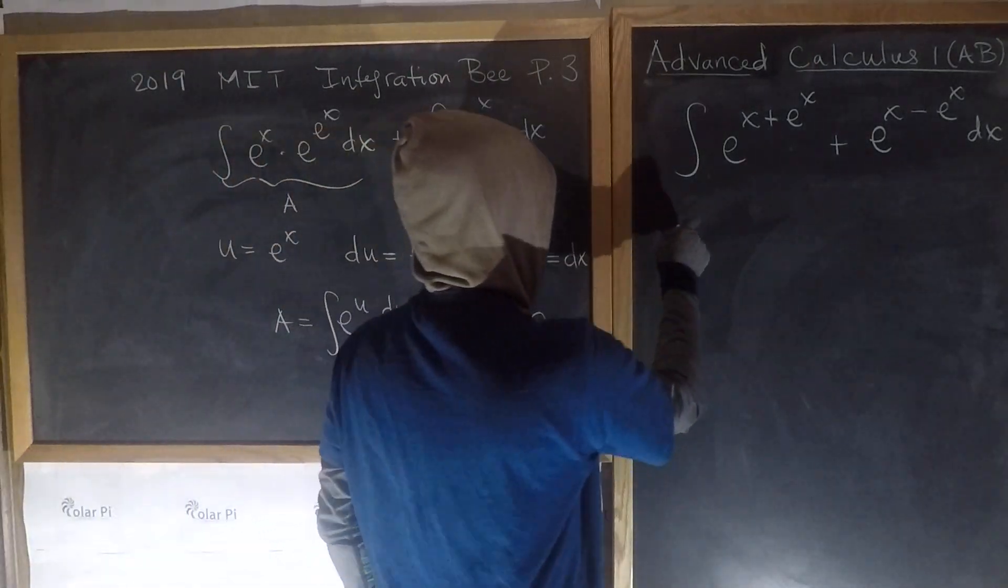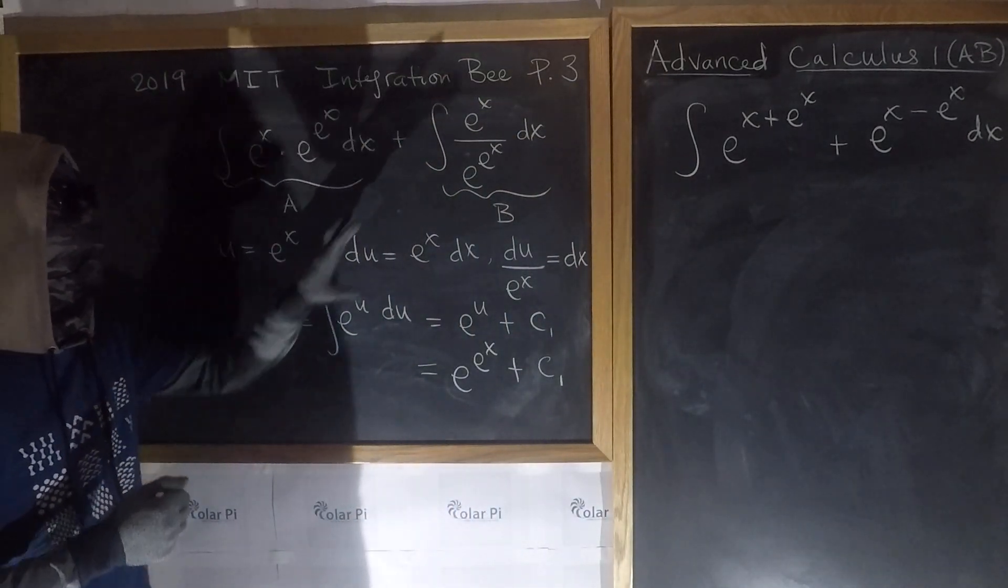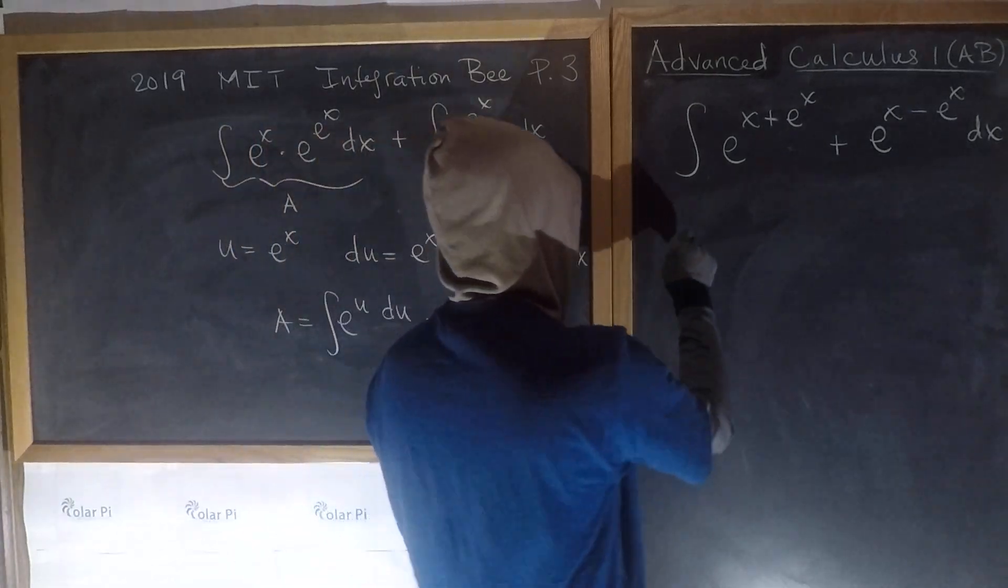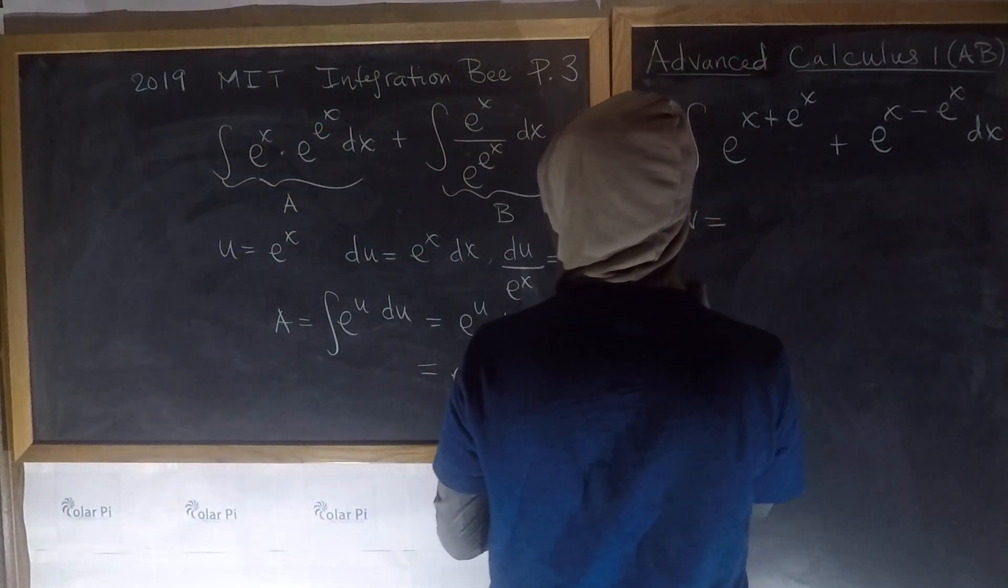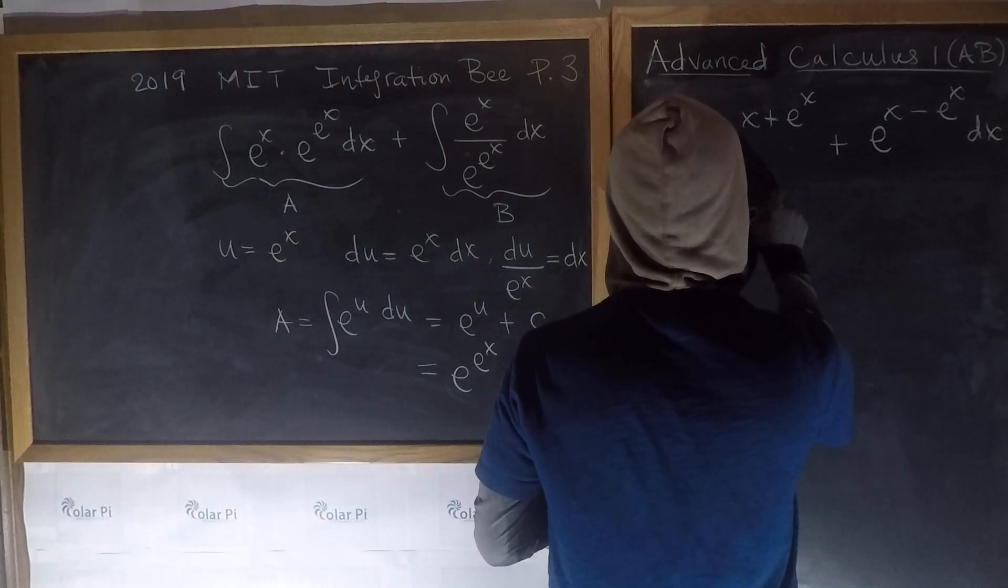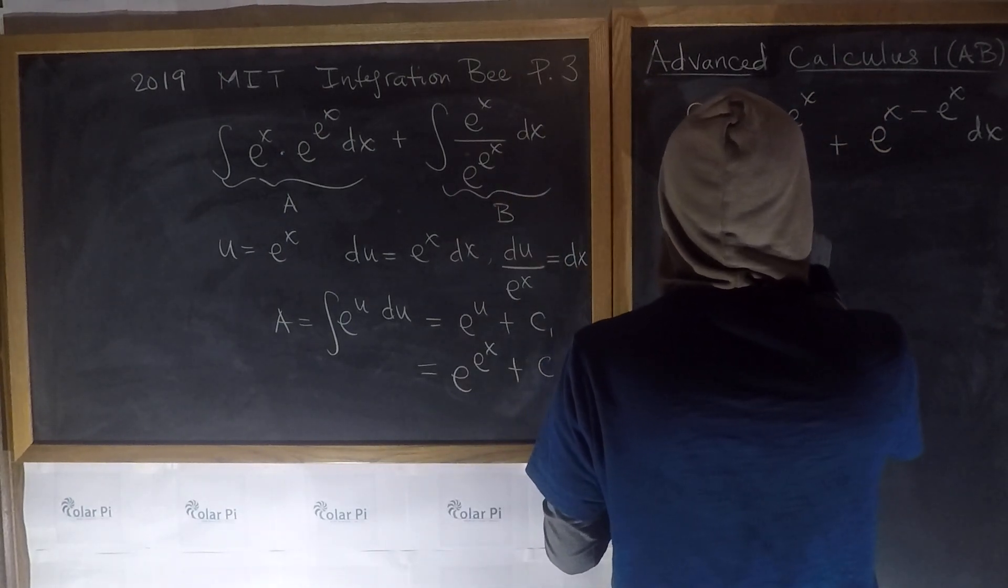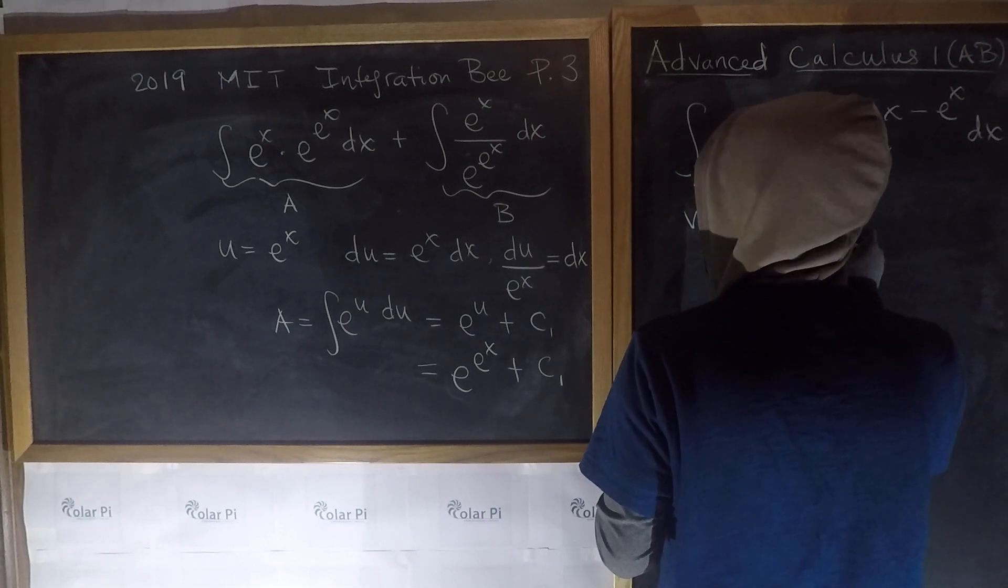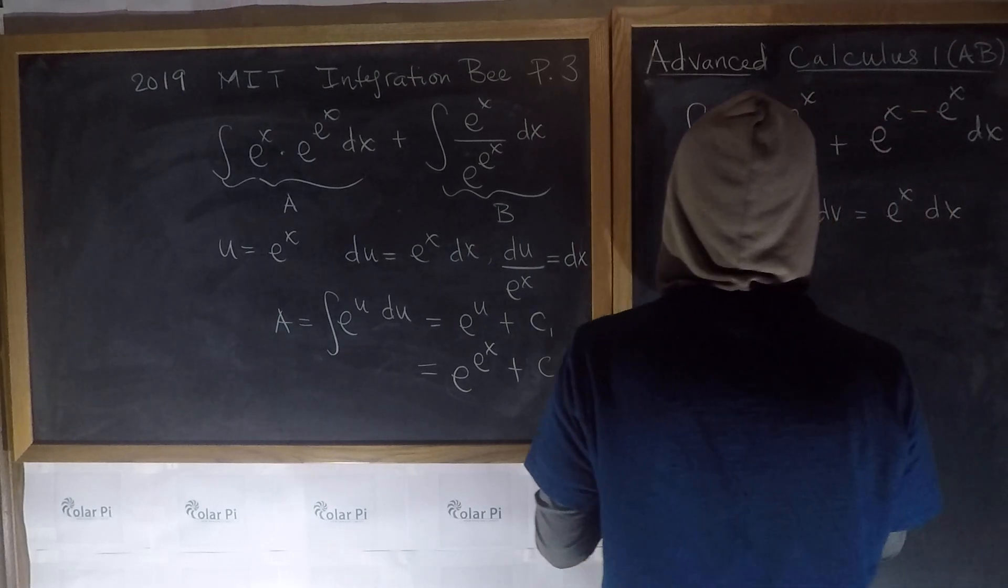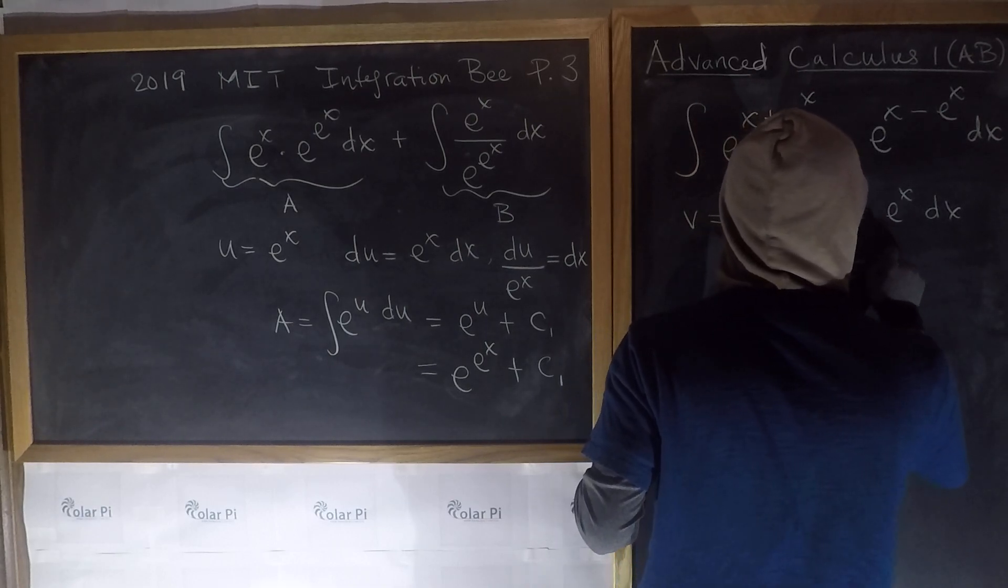Now, for B, well, we're not ready to write B equals yet. But we look at this, and again, we're going to think u substitution, and it is u substitution, but let's use the letter V. And what's V going to be? Well, V is going to be equal to e to the x. Surprise, surprise, this e to the x specifically. And so then, dV is going to equal e to the x dx. And so, dV over e to the x is equal to dx.